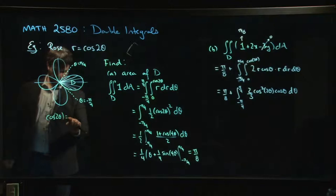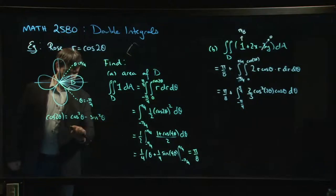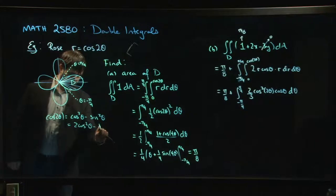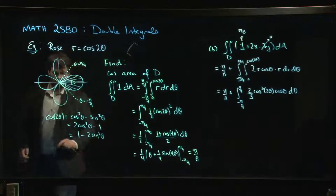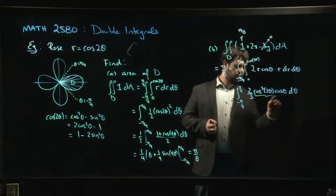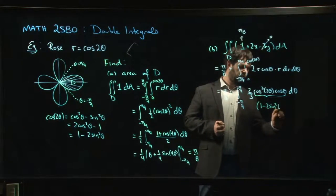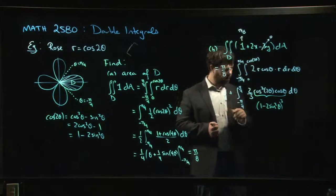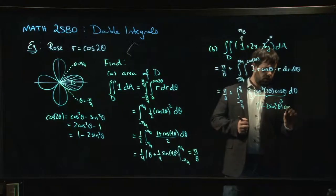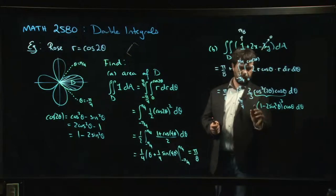Cos cubed... cos 2 theta, I can write as cos squared theta minus sine squared theta. I can also write it as 2 cos squared theta minus 1, or—and here's the one that I want—1 minus 2 sine squared theta. Why do I want that? Because this is going to become 1 minus 2 sine squared theta, all cubed, and then cos theta, and then d theta. 2 over 3 out front.